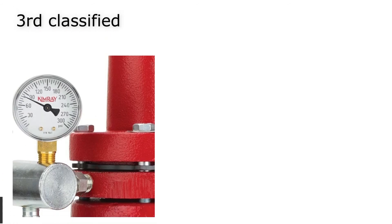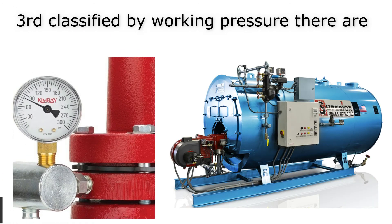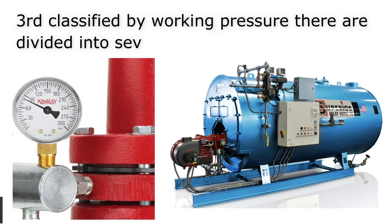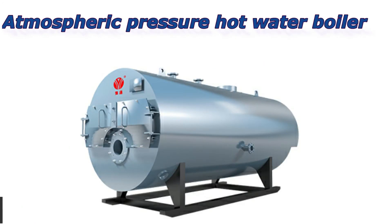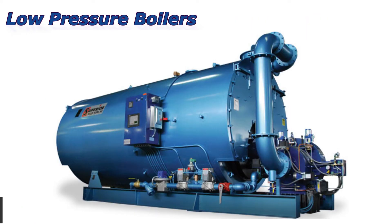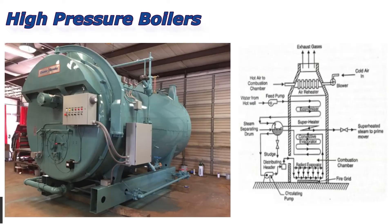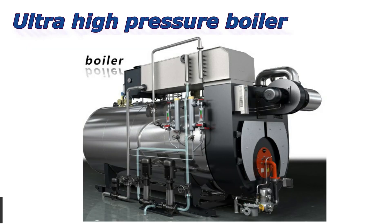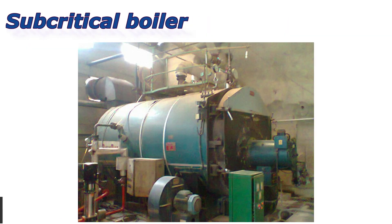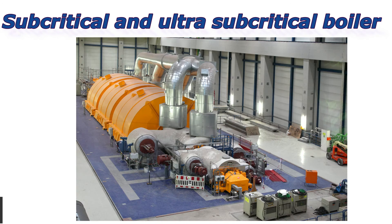Third, classified by working pressure, boilers are divided into seven categories: atmospheric pressure hot water boilers, low pressure boilers, medium pressure boilers, high pressure boilers, ultra high pressure boilers, subcritical boilers, and supercritical and ultra-supercritical boilers.